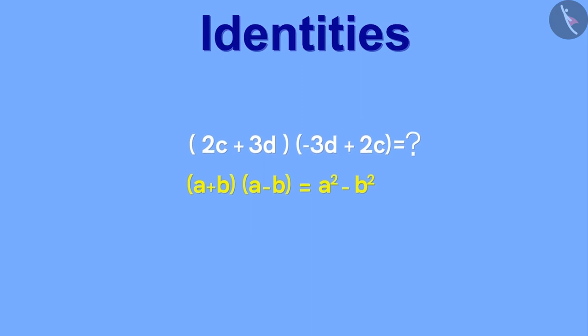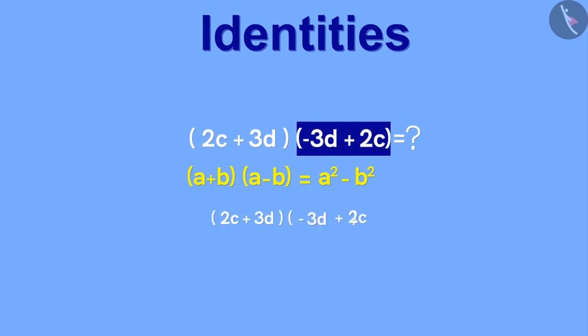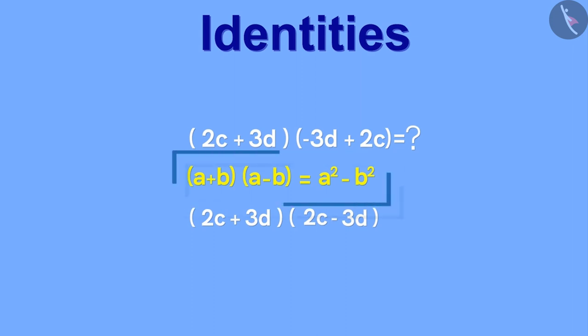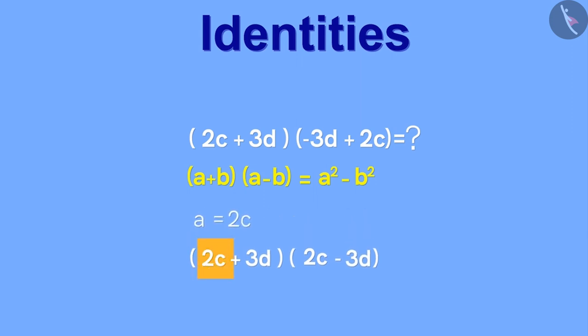We can simply rearrange the second bracket like this. Now if we look at this, we can say that our expression is in the form of (a+b)(a-b). A is 2c and B is 3d.